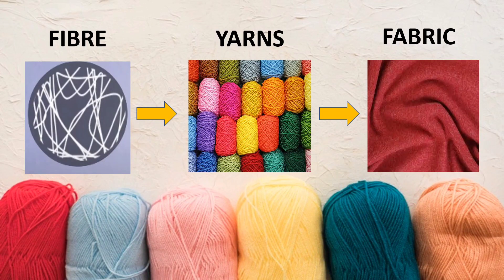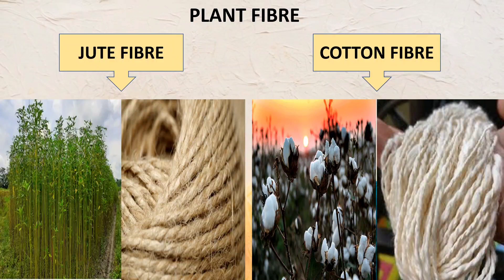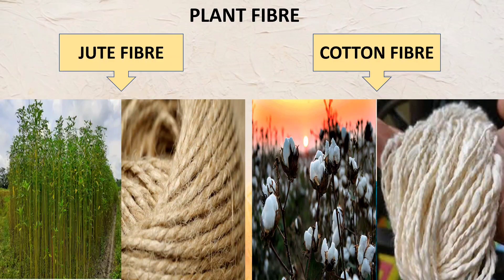This is how we get fabric from fiber, which we already learned in standard 6. We already know that there are two basic types of fiber: man-made and natural. Natural fibers are further divided into two types: plant fiber and animal fiber.